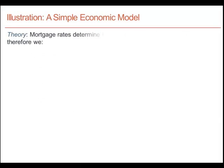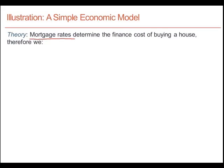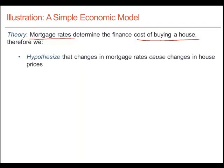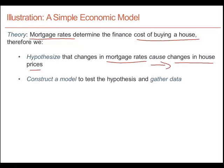Our model of the housing market proposes a causal sequence running from mortgage rates to the cost of buying a house, and therefore to the price of houses in the marketplace. We are going to hypothesize that changes in mortgage rates lead to changes in house prices. We will construct a model on the basis of data that we gather — data for mortgage rates and house prices.